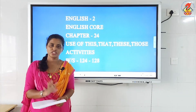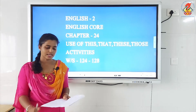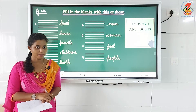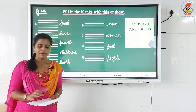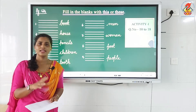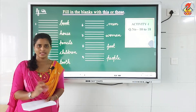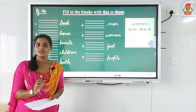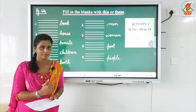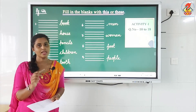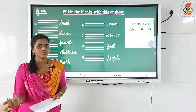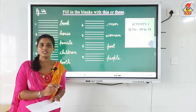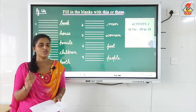OK, on to the first page, page 124. The first activity is on page 124 and I want everybody to be ready with your worksheet. Now, the first activity is fill in the blanks with 'this' or 'these'. We have already learned to use the concept of this, that, these, those. When to use 'this': this is used to specify a noun which is singular in number and which is nearby us. And 'these' are used to specify a noun which is more than one in number — more than one means plural. So, this is used with singular noun and these are used with plural noun.